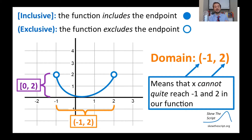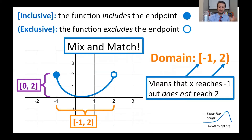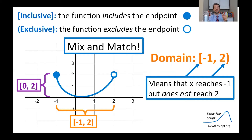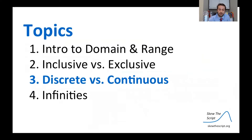If we have non-filled-in endpoints — two empty circles — we use parentheses instead of brackets, meaning x does not quite reach negative one and two; it gets very close but excludes the endpoint. In inequality notation, we just say negative one < x < two without the 'equal to.' We can also mix and match: if the dot on the left is filled in, the lower bound is inclusive, so x can reach negative one, but doesn't reach two, so we use a parenthesis on the right.